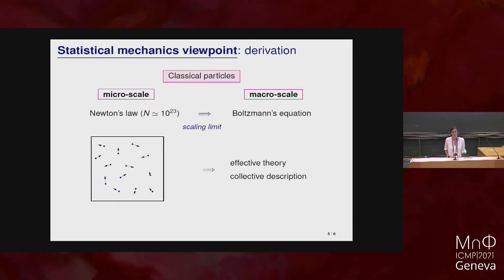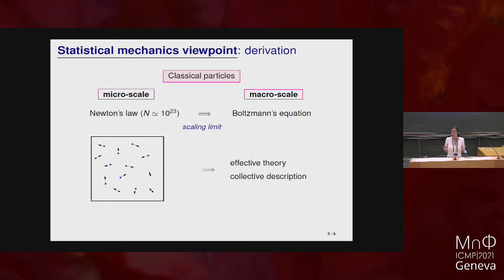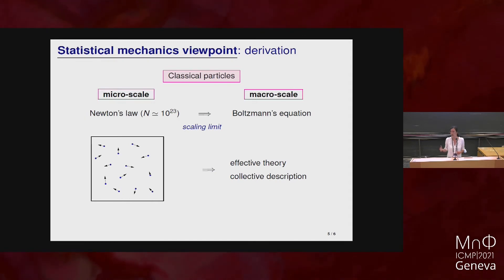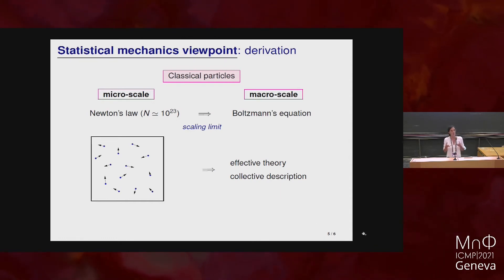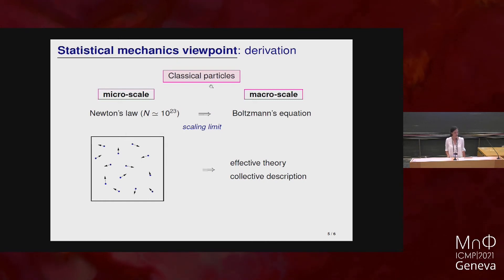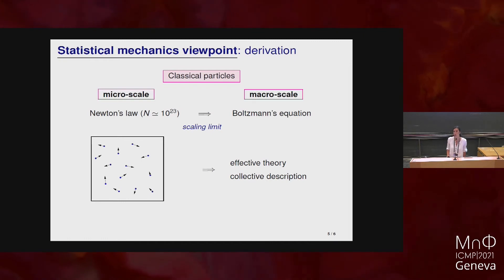Let me now switch to a statistical mechanics viewpoint. This equation — the way Boltzmann obtained it — comes from the fact that you have in your rarified gas many many particles which are interacting. These many particles all move according to Newton's equations. You want to approximate this picture at the macroscopic scale with something easier to measure, and this is what Boltzmann did when he wrote down the Boltzmann equation — retaining the collective behavior of the gas without looking at the motion of each single particle.